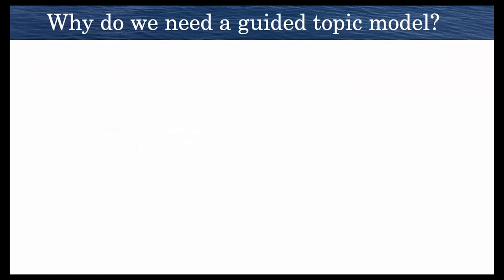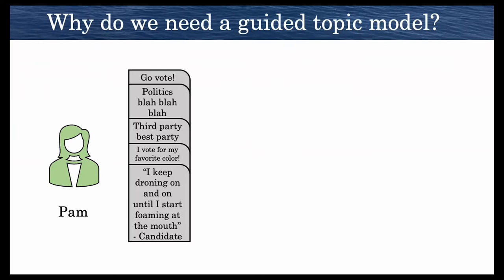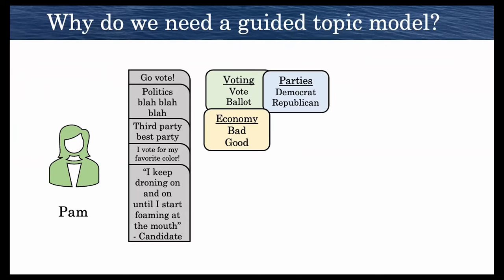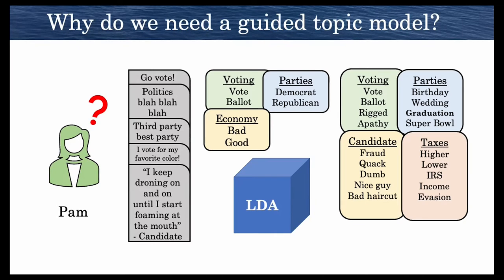So why do we need a guided topic model in the first place? Let's assume we have a social scientist, let's call her Pam. Pam has a set of tweets about the 2020 election. She's an expert in elections, so she knows that there should be a few topics in this dataset without doubt. She puts her data set into LDA and she gets the following topics up, and Pam is confused, rightfully so.